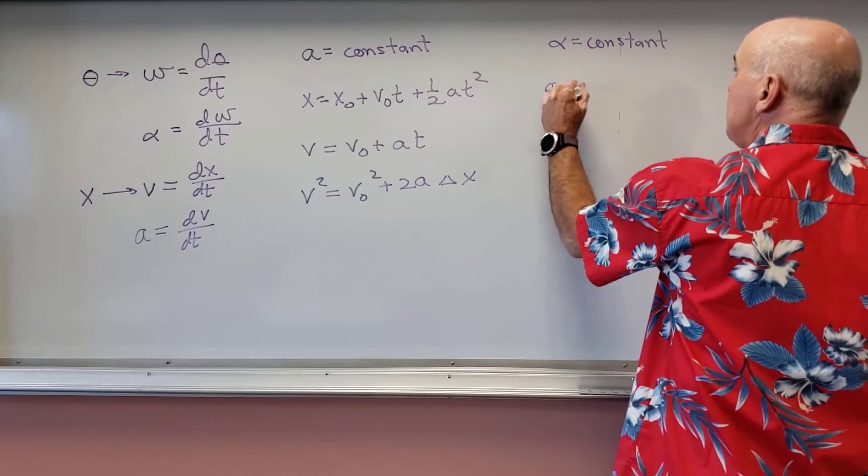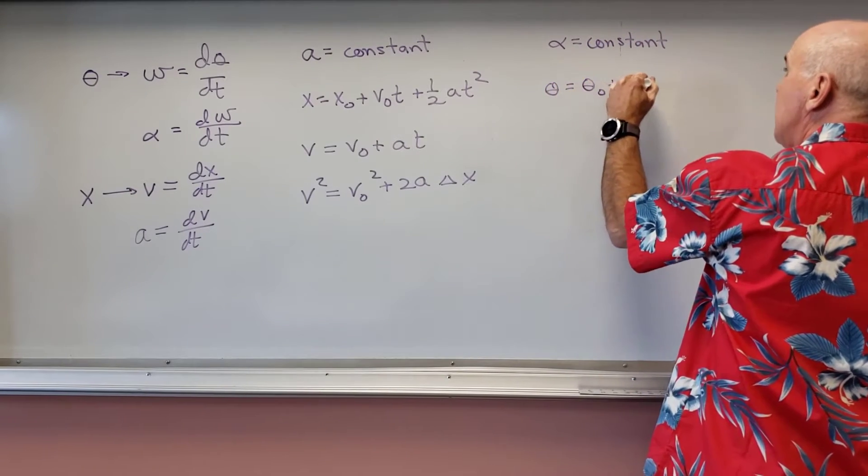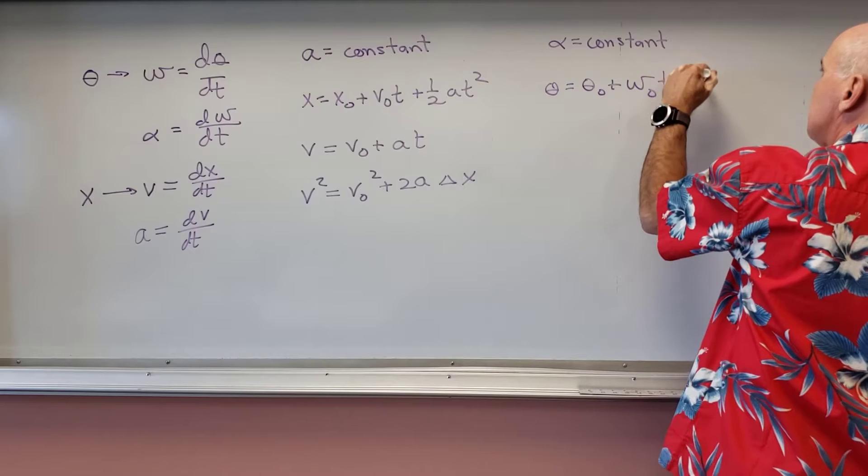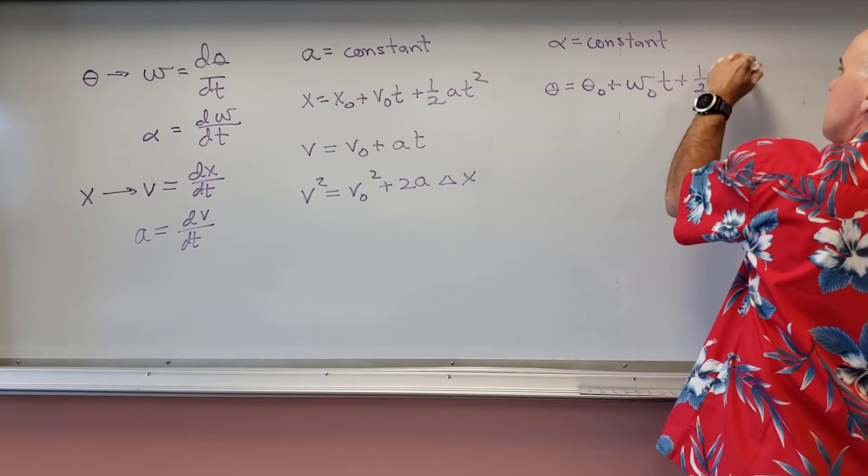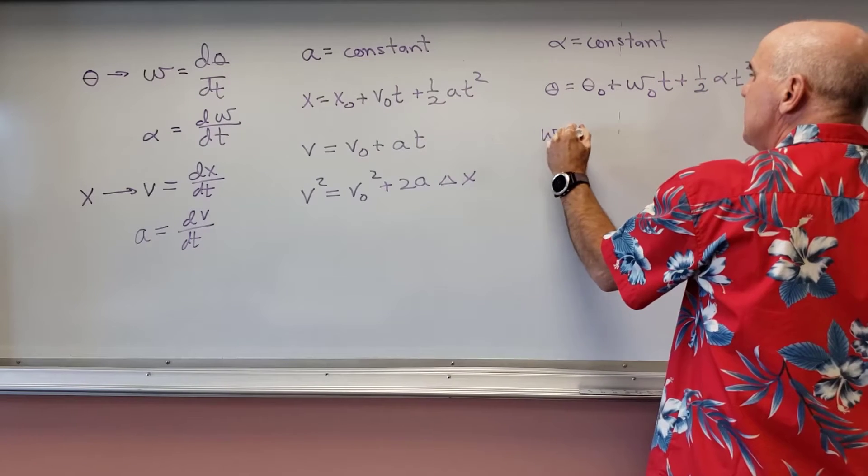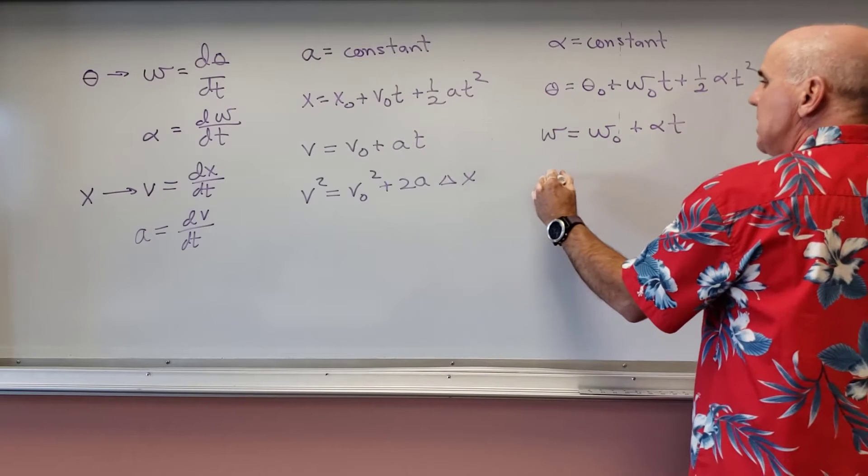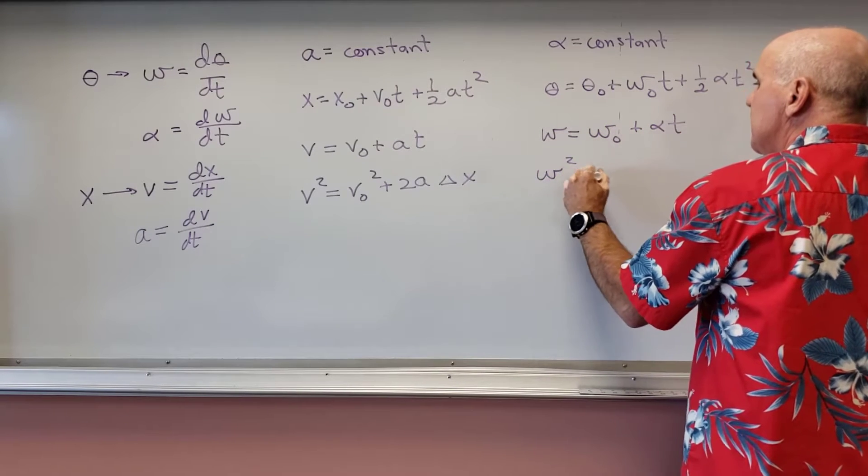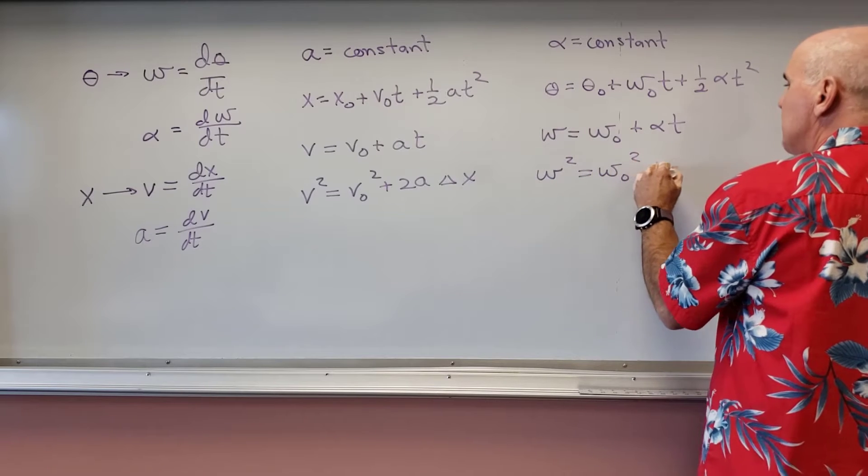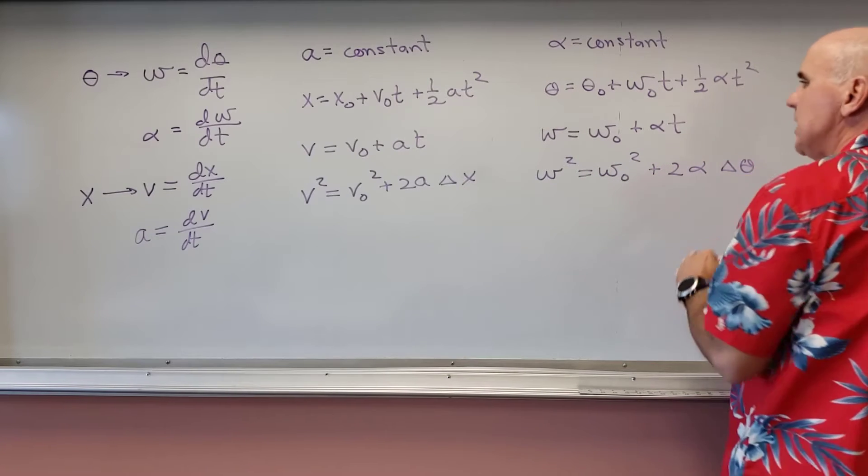So theta is equal to theta0 plus omega0t plus 1 half alpha t squared. And omega equals omega0t plus 2 alpha delta theta.